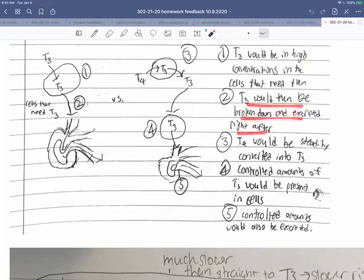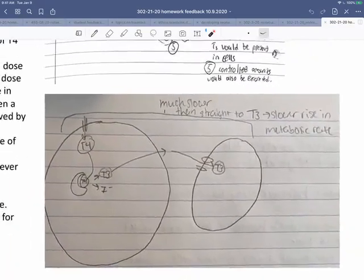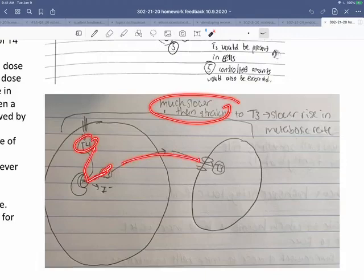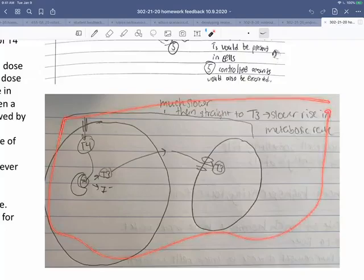So T3 is in high concentrations in cells that need them. T3 will be broken down and excreted in the liver and the kidney. On the other hand, T4 is going to be steadily and relatively slowly converted into T3. Therefore, there are controlled amounts of T3 present in the cells and controlled amounts excreted. Here's a simpler version that also captures the same point. It's just going to be much slower to have the T4 that needs to be converted to T3, and so you're going to get a slower rise in metabolic rate. This person also should have pointed out the effect of excretion, but I accepted this one as well. That captures the idea.